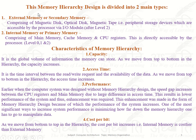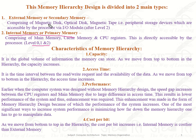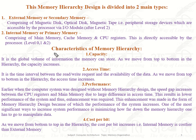Memory hierarchy is divided into two categories: internal memory and external memory. Internal memory includes main memory, cache memory, and CPU registers — levels 0, 1, and 2 in the pyramid. External memory includes everything after level 2, such as magnetic disk, optical disk, magnetic tape, and peripheral storage devices, which are accessible by the processor via input/output modules. Internal memory resides inside the CPU, like registers and cache memory.